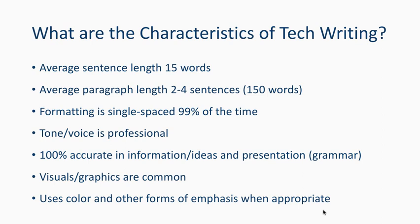Visuals and graphics are very common in technical writing — pictures, diagrams, graphs — because a picture is worth a thousand words. You can display a lot of information quickly. You also want to use color and other forms of emphasis such as bold, but sparingly, so readers can tell what is truly emphasized versus what is less important.